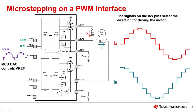By using current regulation on the PWM and phase enable interface, microstep resolution is fundamentally limited by the DAC resolution. For instance, a 10-bit DAC can potentially implement 1023 microstep levels.